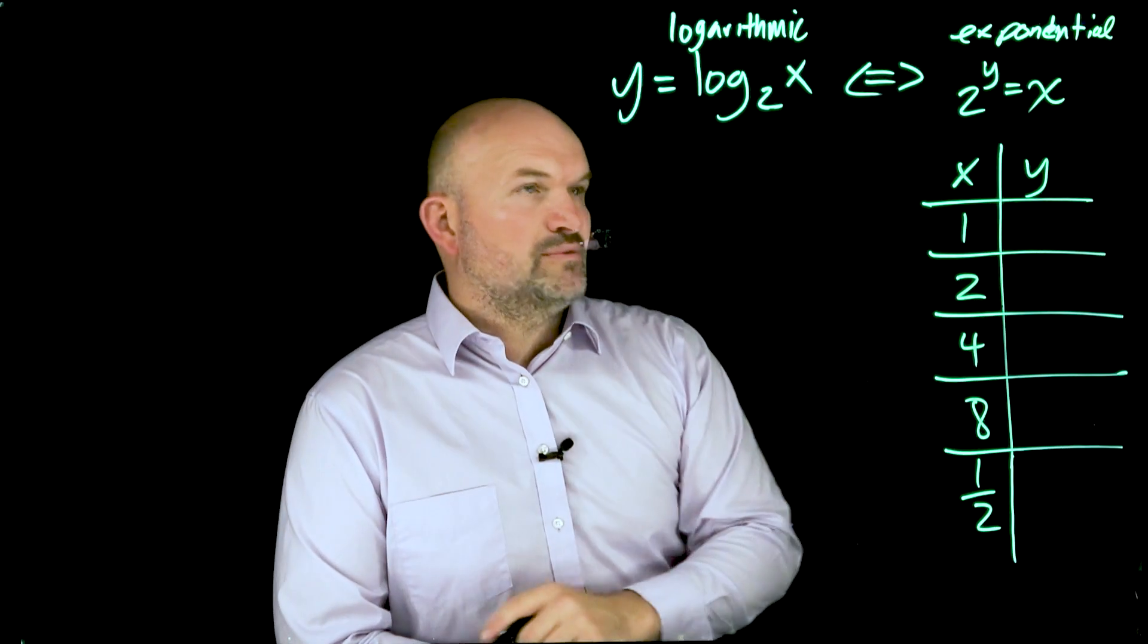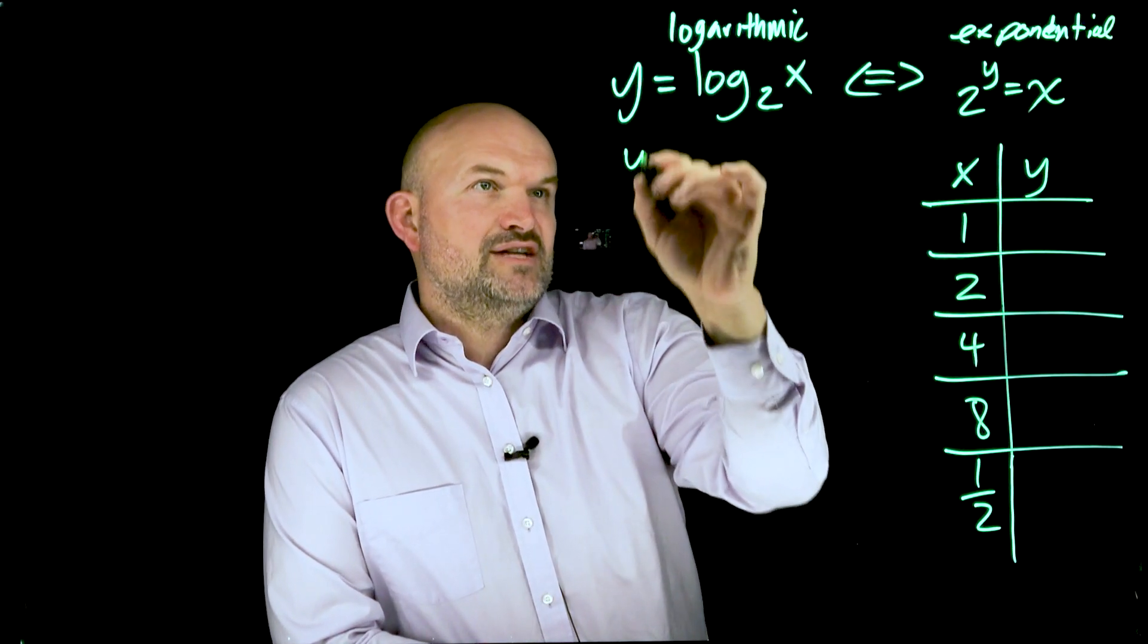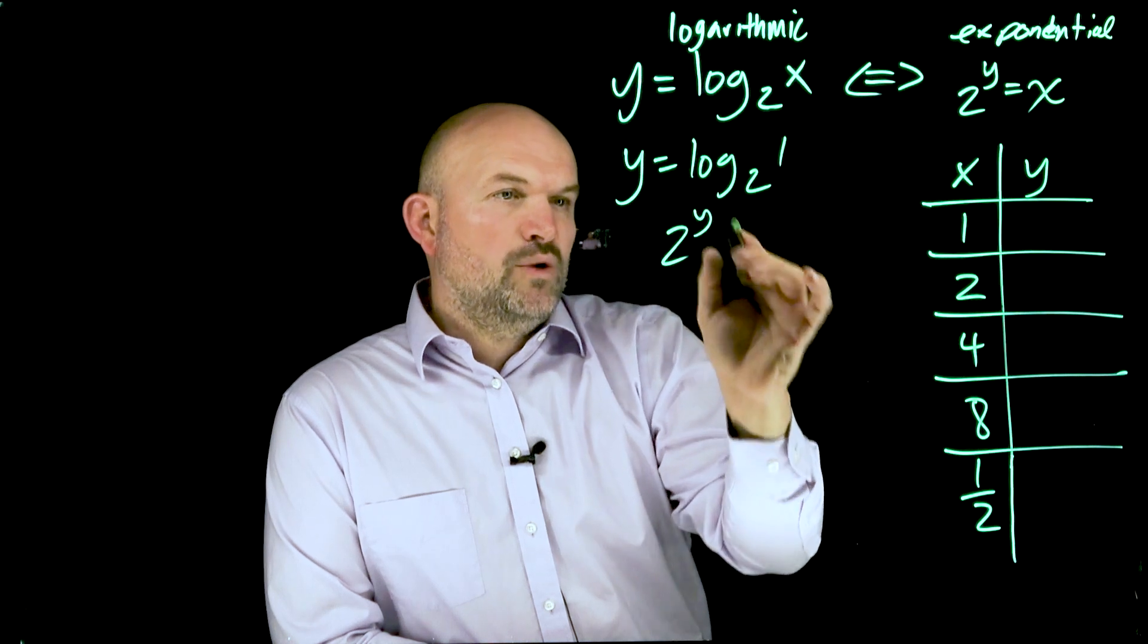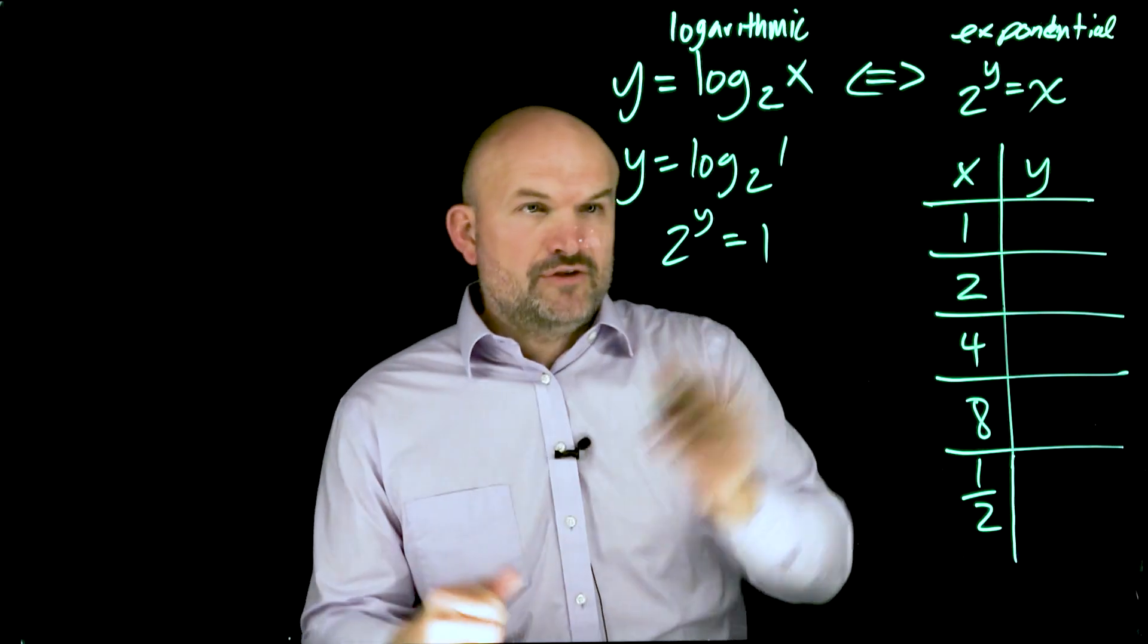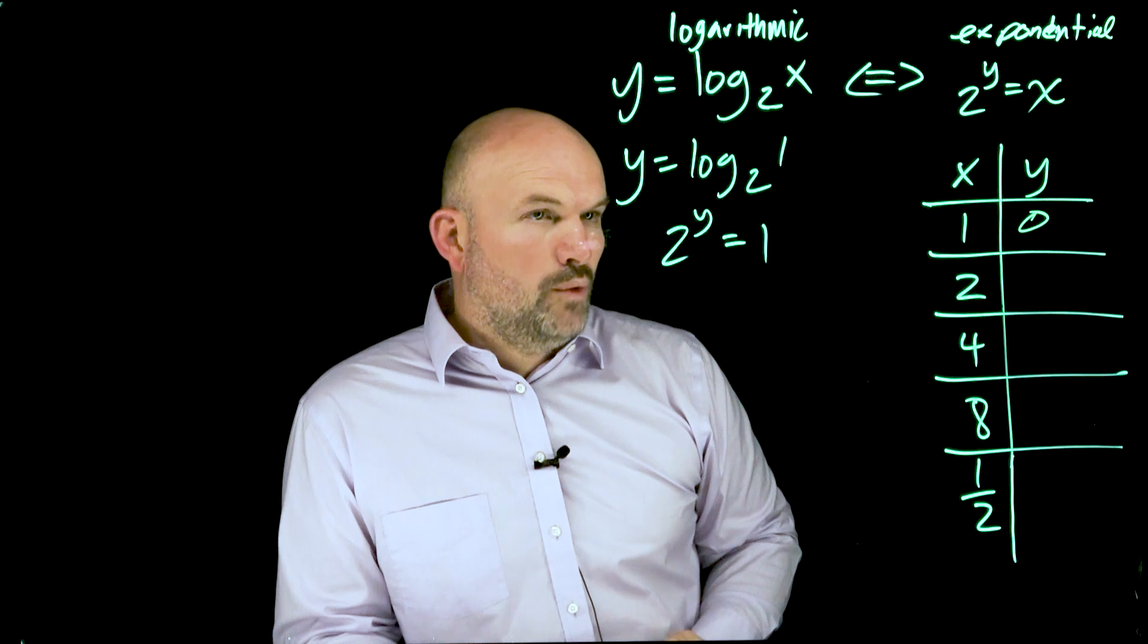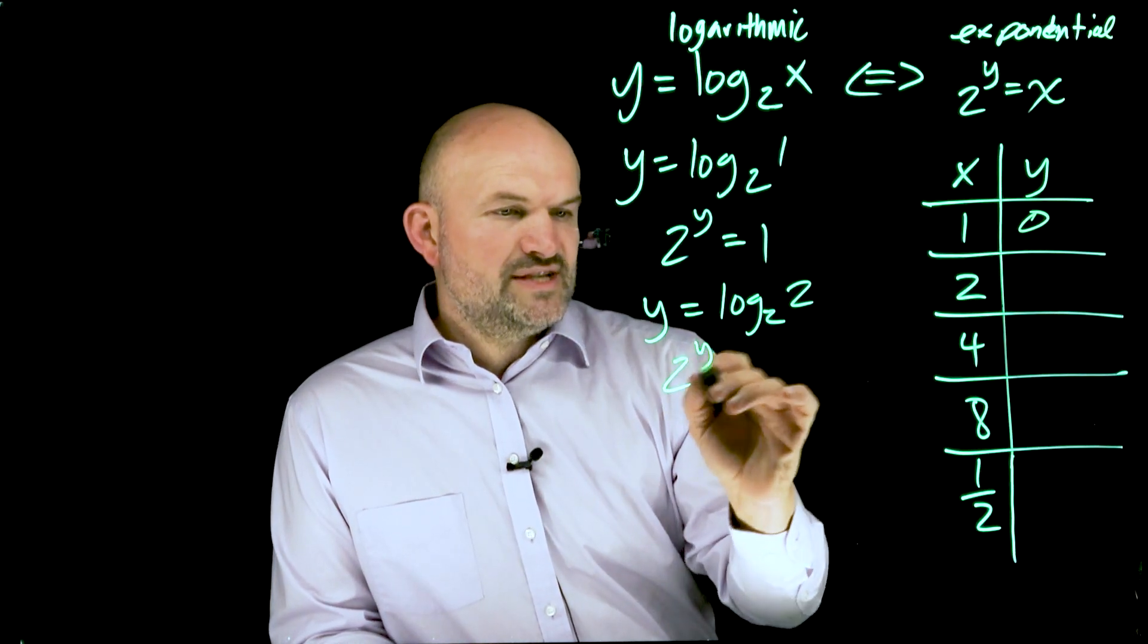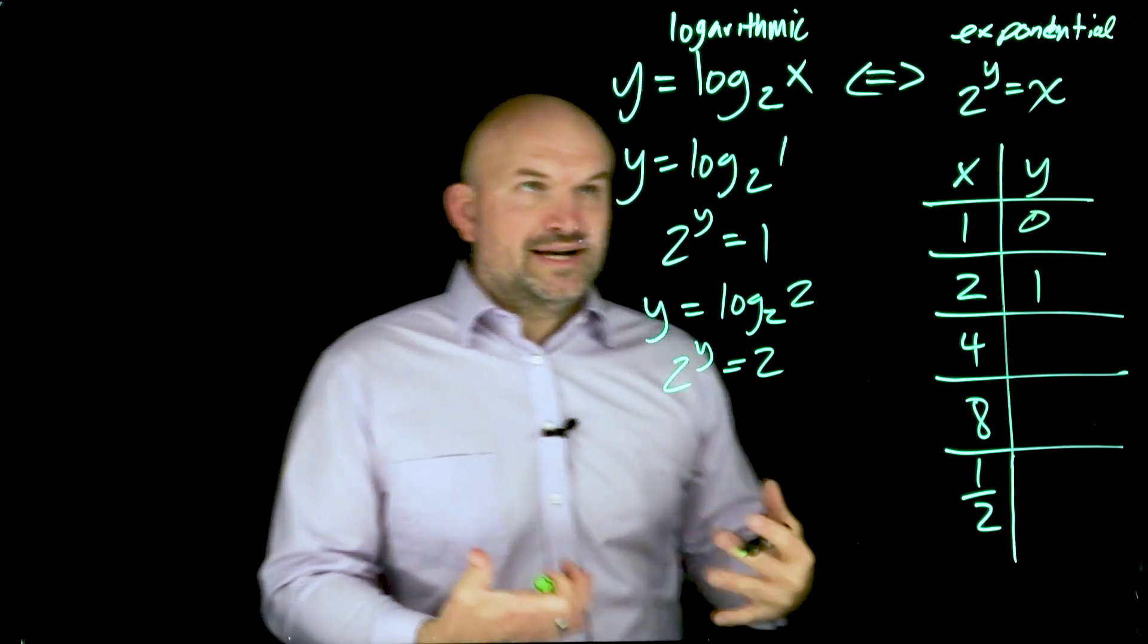Let's start with the first one. If I wanted to understand which is going to be 1, so if I rewrite this as y equals log base 2 of 1, think about this in exponential form. All this is really saying is 2 raised to what value is going to equal 1? Hopefully you remember from exponential functions, anything raised to 0 is going to give us the value of 1.